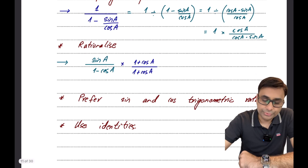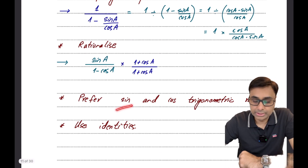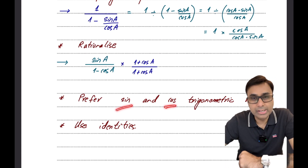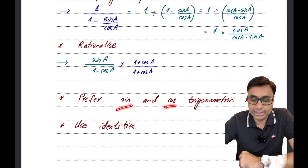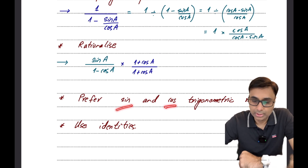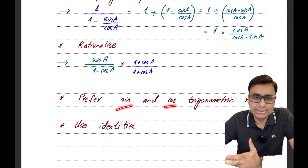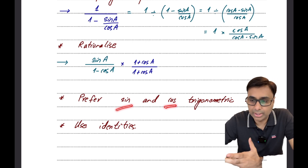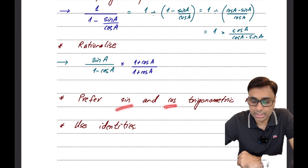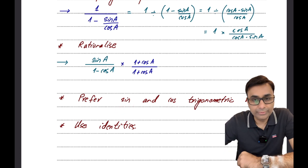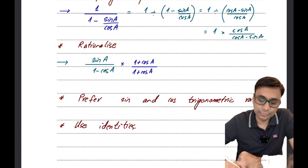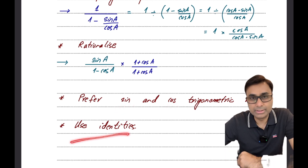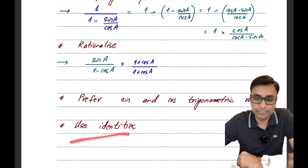Whenever you're trying to prove a trigonometric identity I would recommend you to use more of sin and cos trigonometric ratios. If you have tan, try and replace that with sin and cos. If you have cosec, try and replace that with sin and cos using trigonometric identities. And definitely at all times you have to keep an eye on the identities that you might be using.